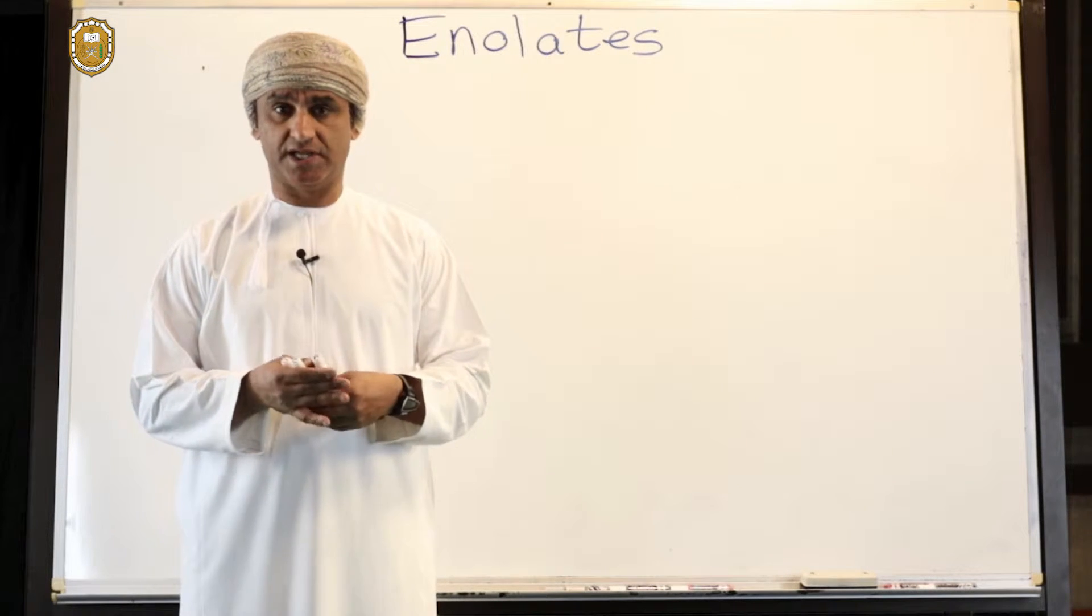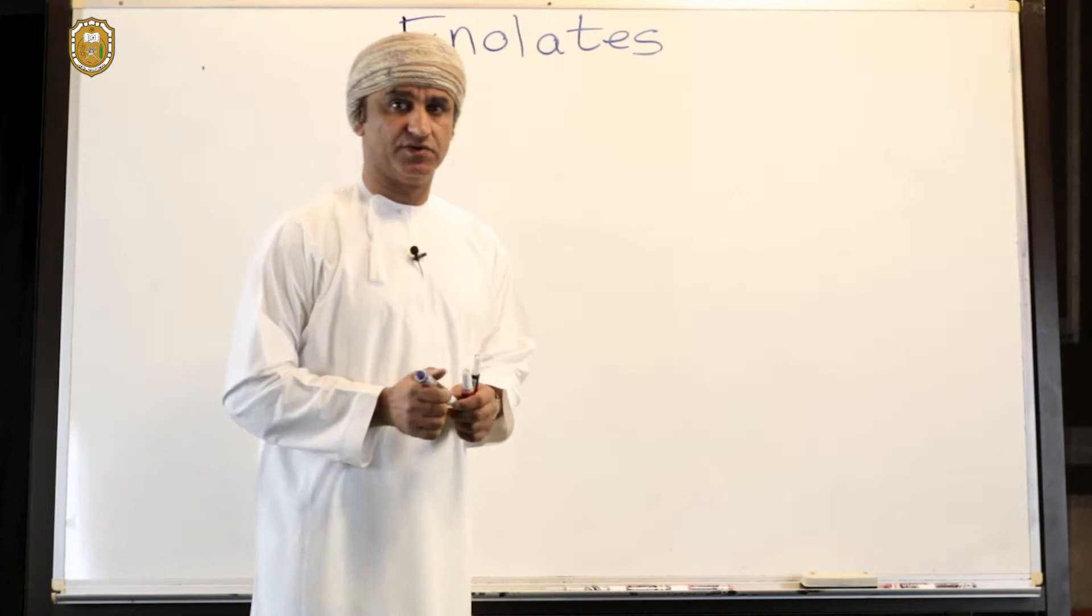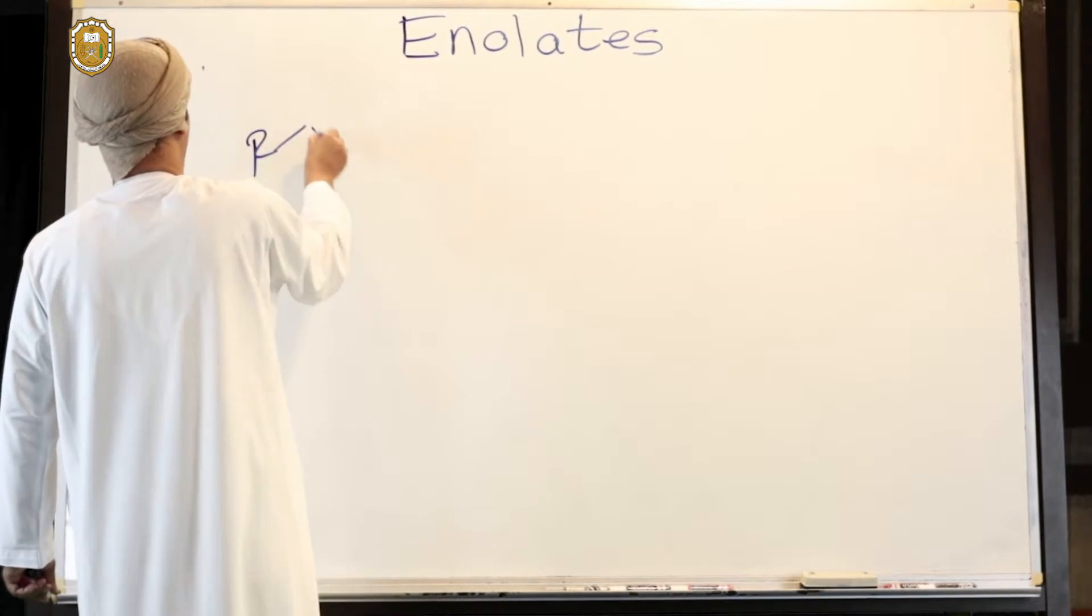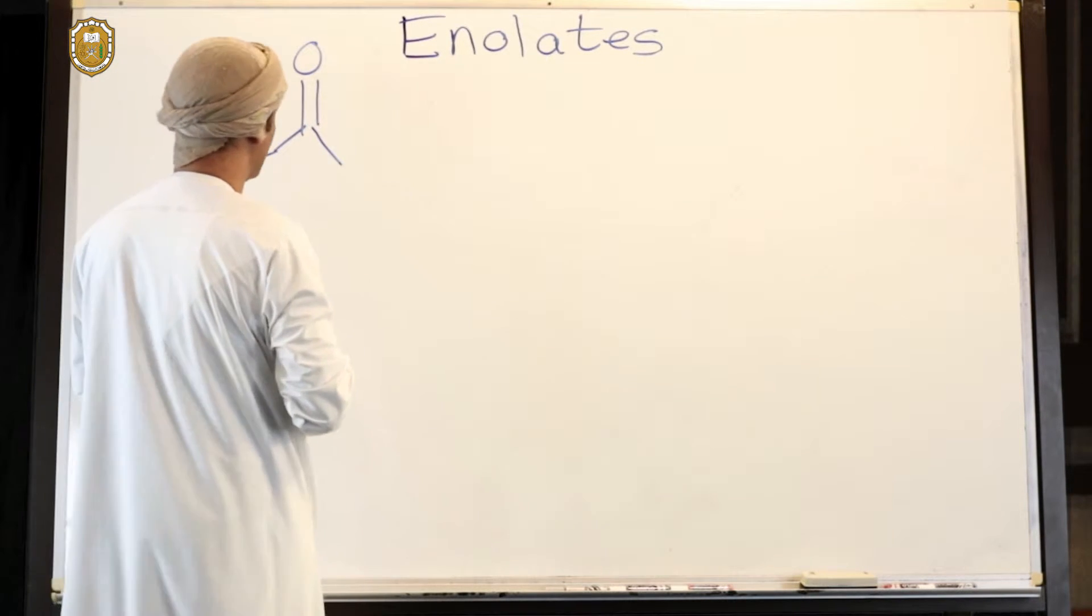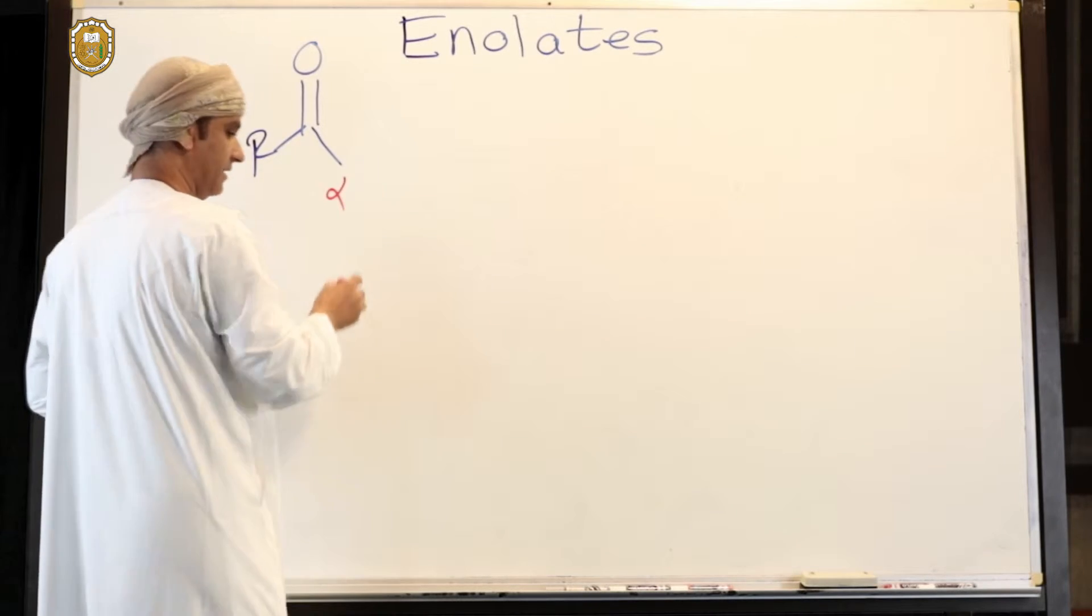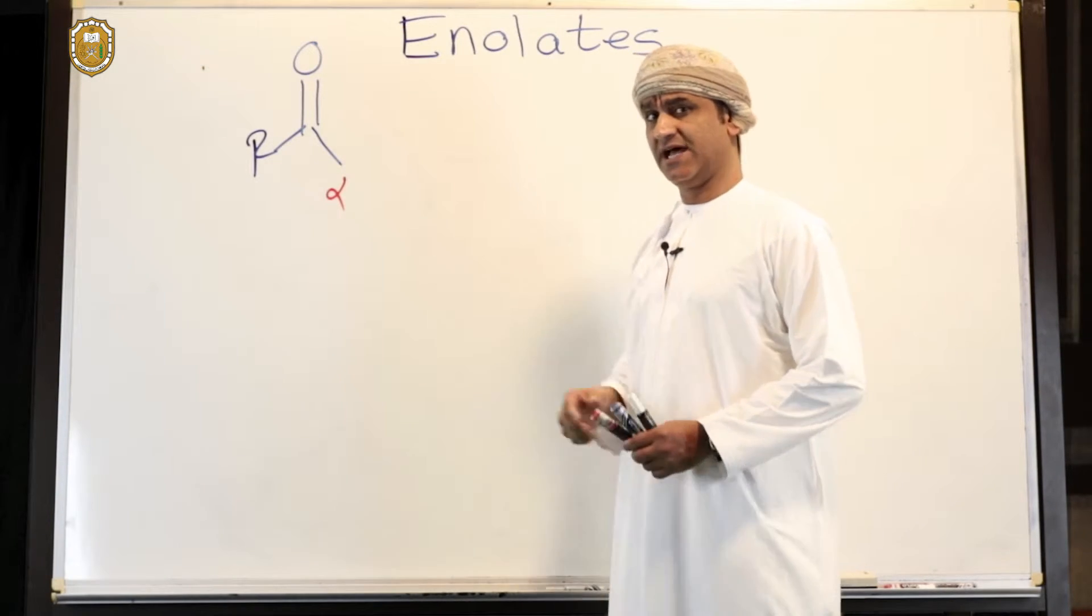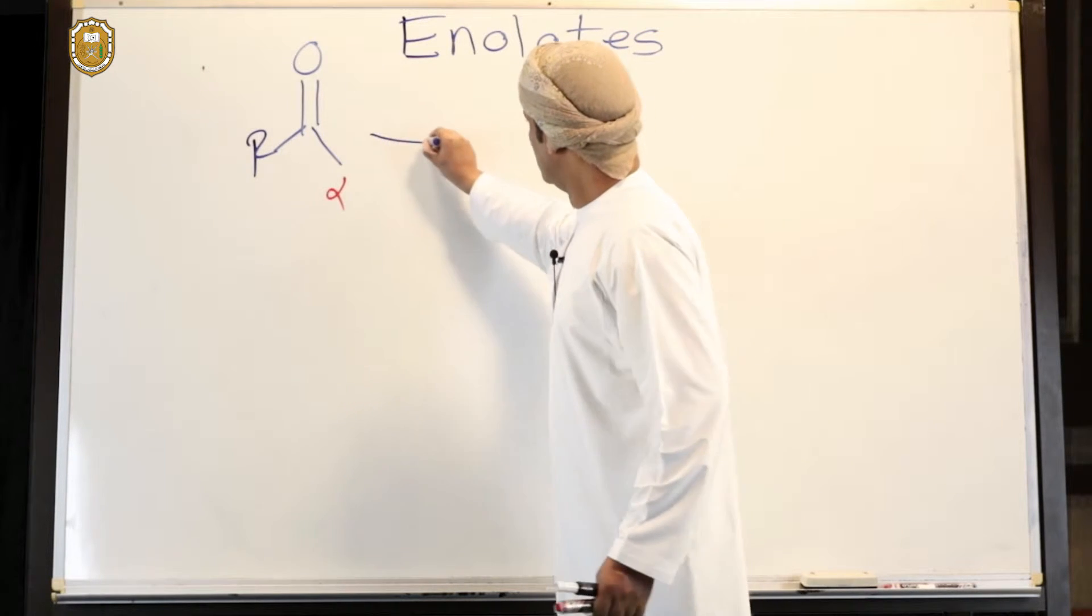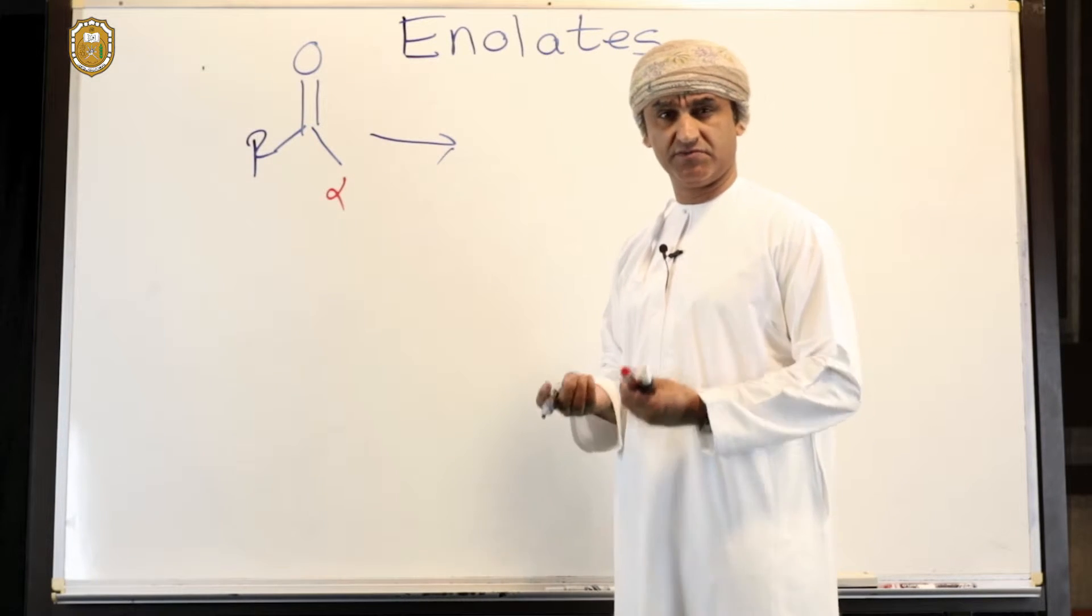Let's take a general structure for a ketone with an alpha position and hydrogens on that alpha position. This is a general structure for a ketone with an alpha carbon and that carbon obviously has hydrogens. Now if this ketone loses one of the protons, one of the hydrogens on that alpha carbon in the form of a proton,